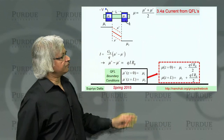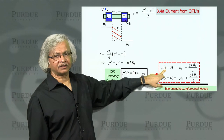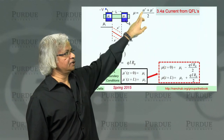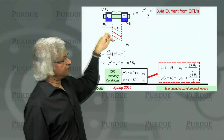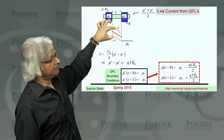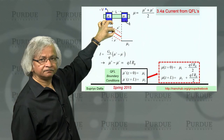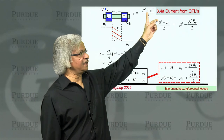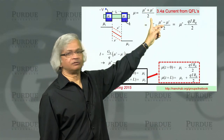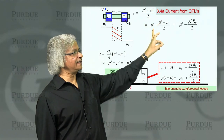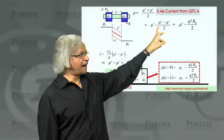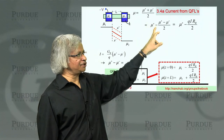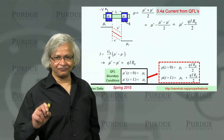What you do is first note that what you call this electrochemical potential that appears here is actually the average of the two quasi-Fermi levels. That is, if this is mu plus and this is mu minus, then mu is the average of the two. Now, with a little algebra, I can just take mu plus plus mu minus over 2 and write it as mu plus minus the difference over 2. You can check it out — it's just straightforward algebra.